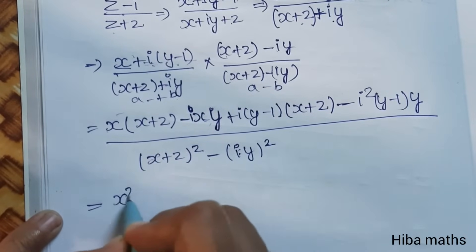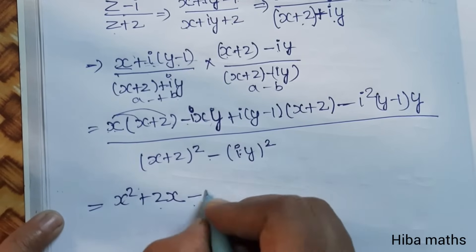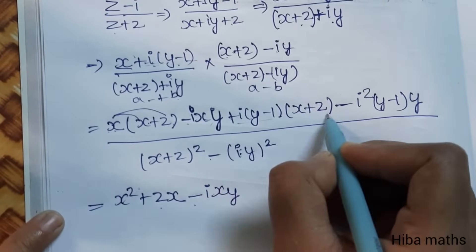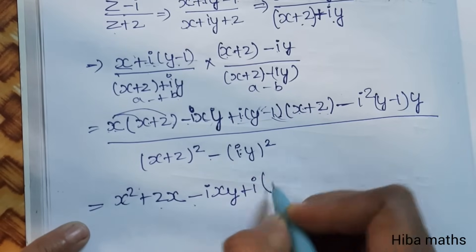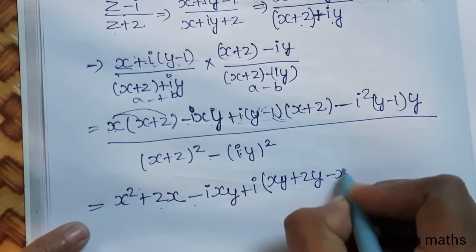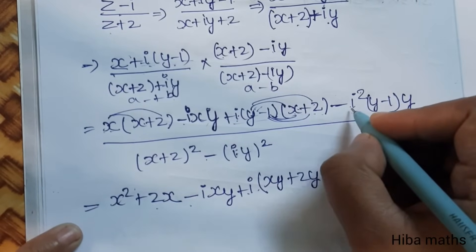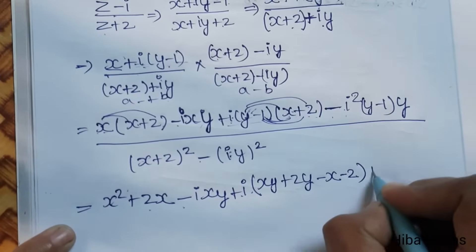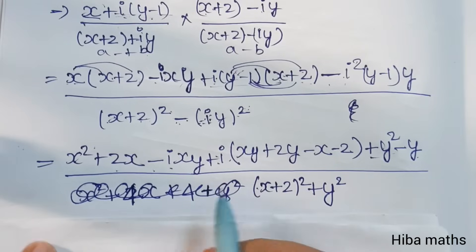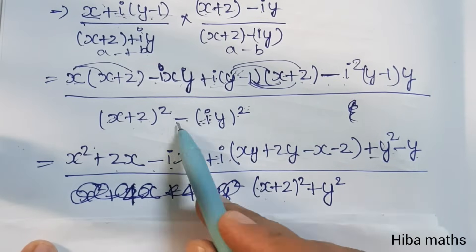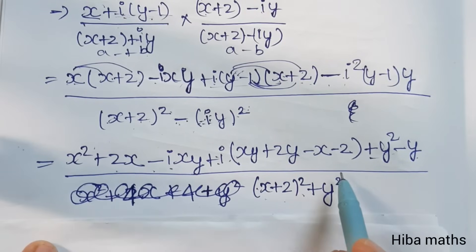Now expanding inside: x times x gives x square, plus 2x. Then minus i·x·y. Then y into x, y into 2, minus 1 into x, minus 1 into 2. Collecting the i terms: i times (xy plus 2y minus x minus 2). Since i square equals minus 1, the term minus i squared times y(y minus 1) becomes plus y(y minus 1), giving y square minus y.